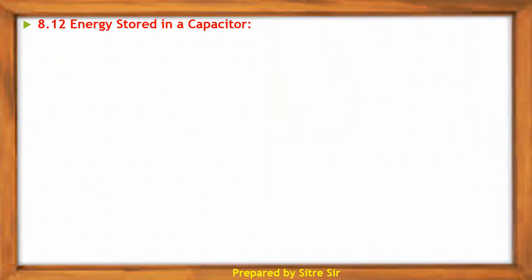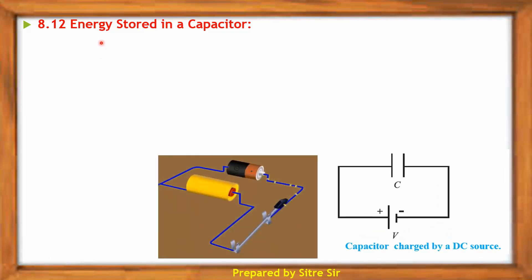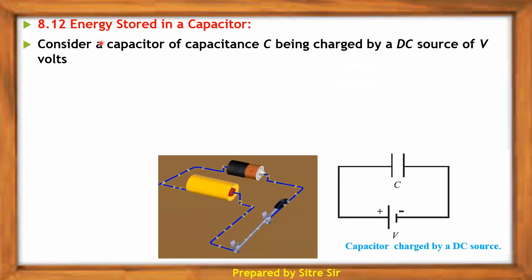Next point is energy stored in a capacitor. Consider this diagram and corresponding animation of this capacitor. Consider a capacitor of capacitance C being charged by a DC source of V volts.